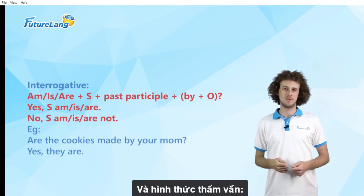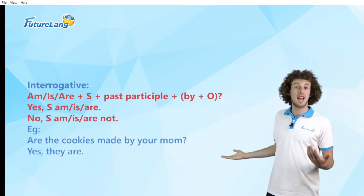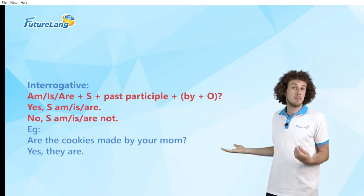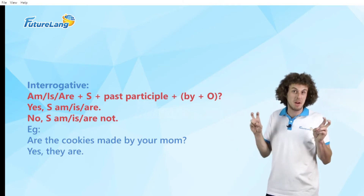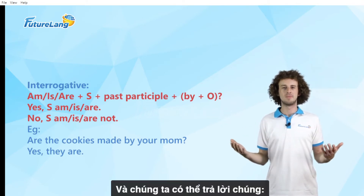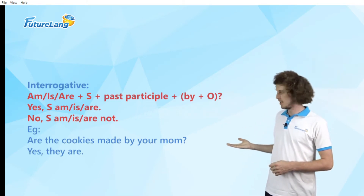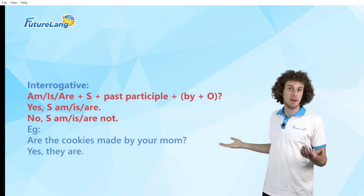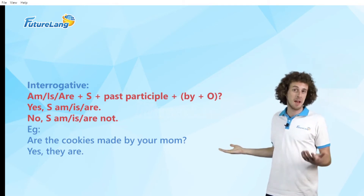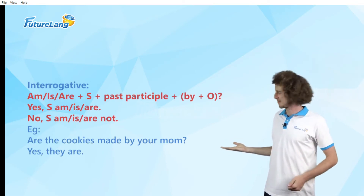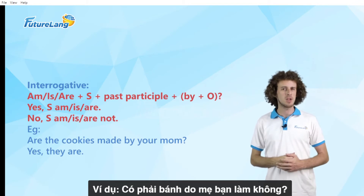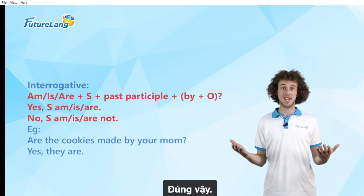And the interrogative form: am, is, or are, plus subject, plus past participle, plus by object. And we can answer them: yes, subject am/is/are, or no, subject am/is/are not. For example, are the cookies made by your mum? Yes, they are.